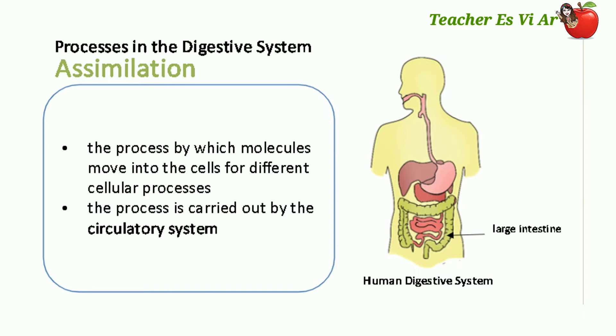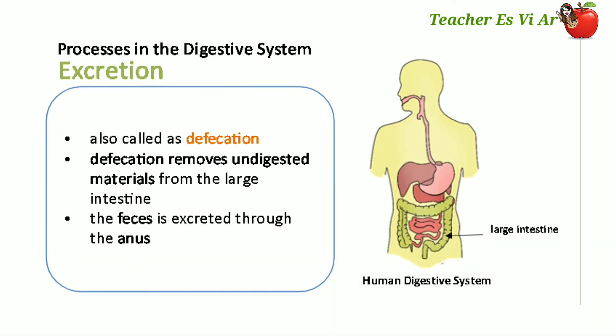In the digestive system, the term for excretion is specially called defecation. Defecation removes undigested materials from the large intestine. If not excreted, it can lead to health problems. The feces are excreted through the anus.